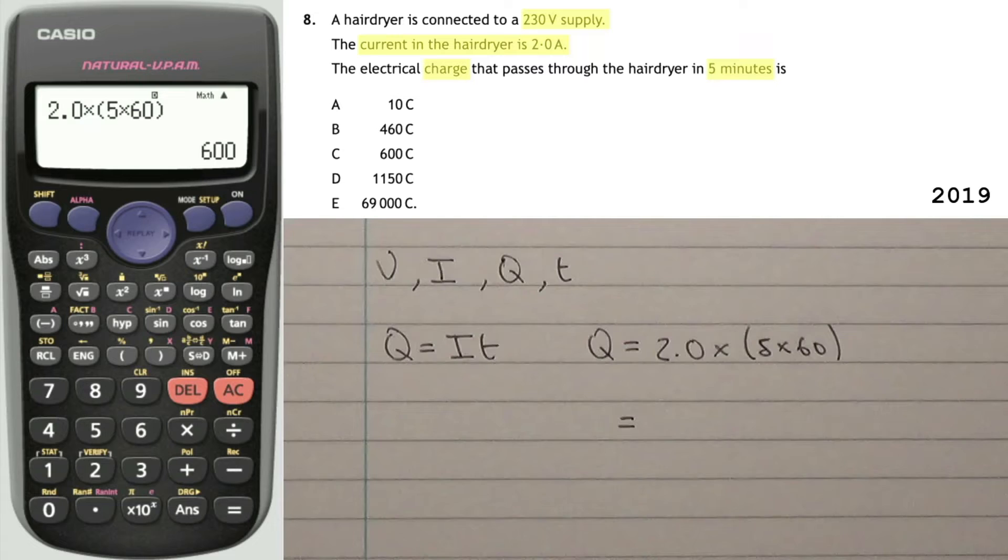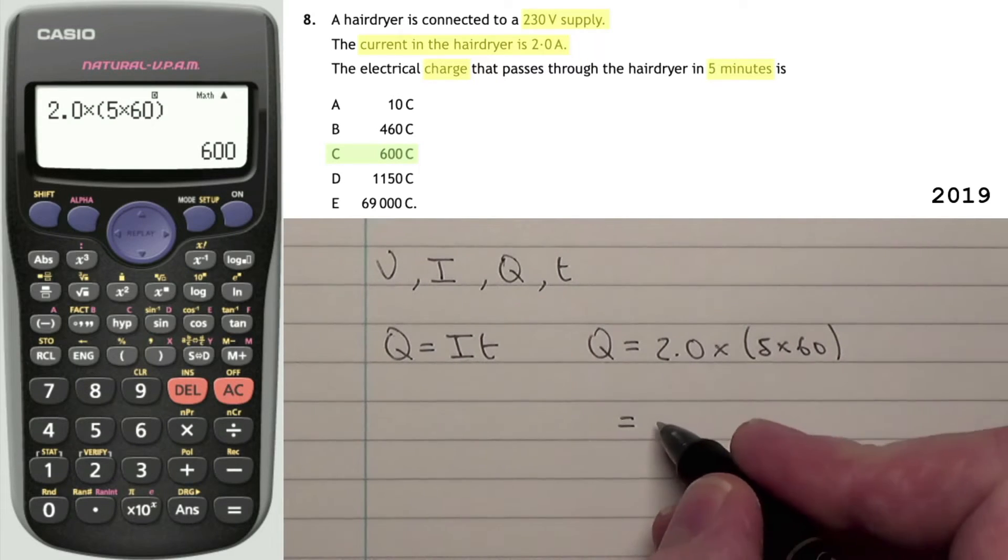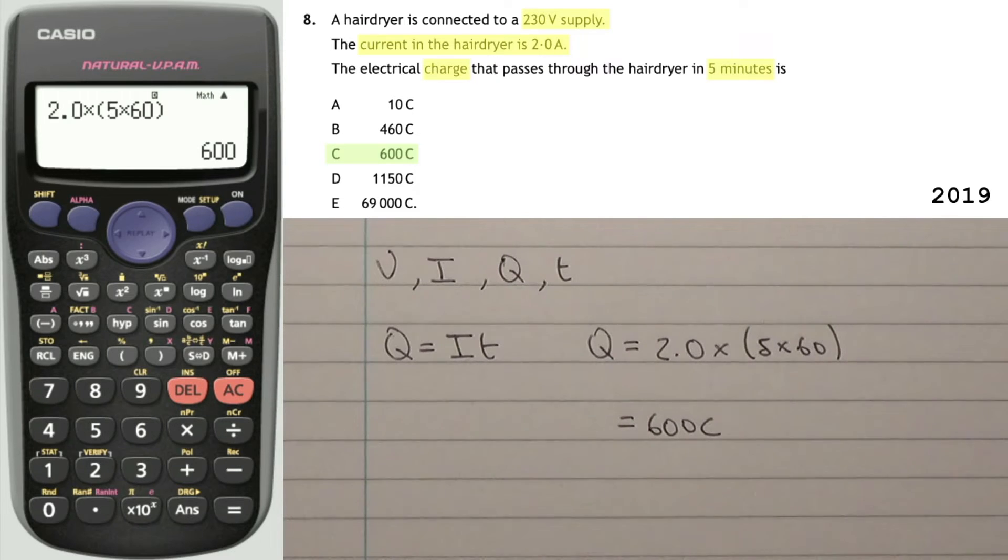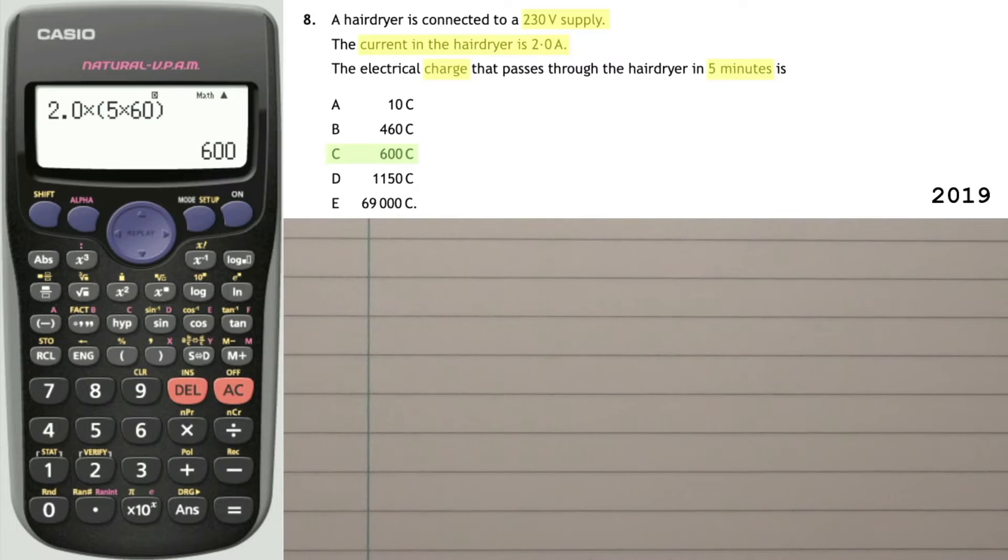Hopefully you get the same there. And the answer would be C in this question, so 600 coulombs. We're going to try another one. As I said, I'll read through the question. What I would like you to do is, when I tell you to pause the video, then pause obviously. Write down all the different symbols that you'd be looking for. And then after identifying the different symbols, you want to be looking at the relationship sheet. Once you've found the correct relationship, at least the one that you think is correct, start playing the video.